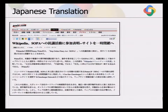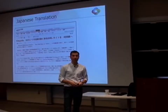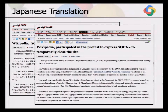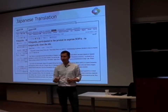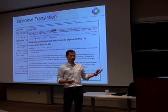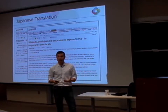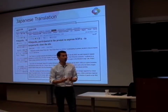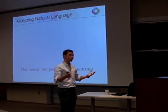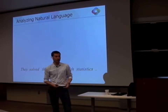But if we look at Japanese, where the syntactic structure is quite different from English, things are a lot worse. Looking at the translation of the second sentence: 'Mr. Wells is a copyright protection bill pending in Congress, caused the controversy for the SOPA, as said, it intended to suspend operations as approaches along with other websites.' There are bits and pieces that make sense, but the overall sentence structure has been completely lost. That's because using only surface-level statistics without taking sentence structure into account is not sufficient in this context.